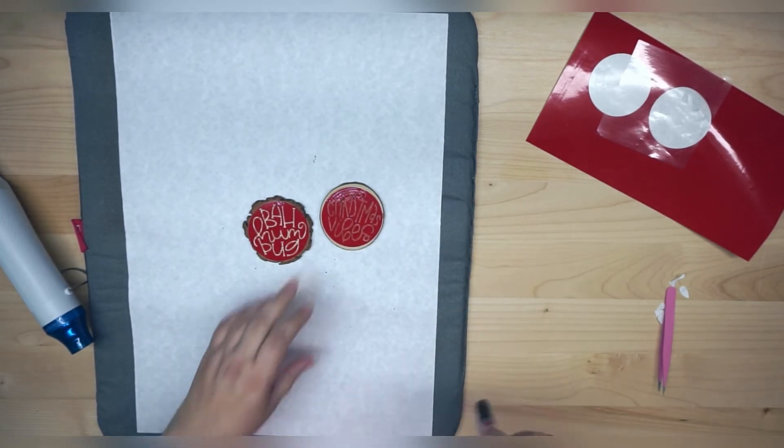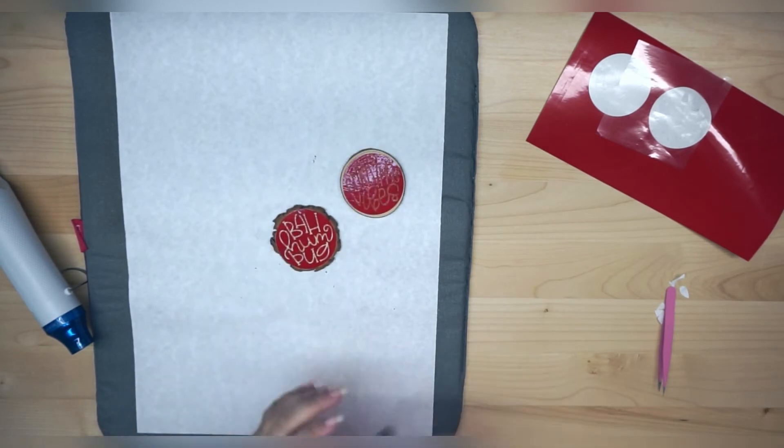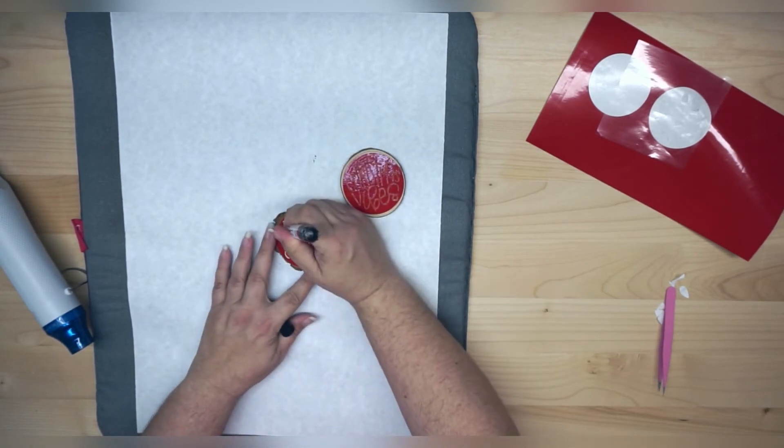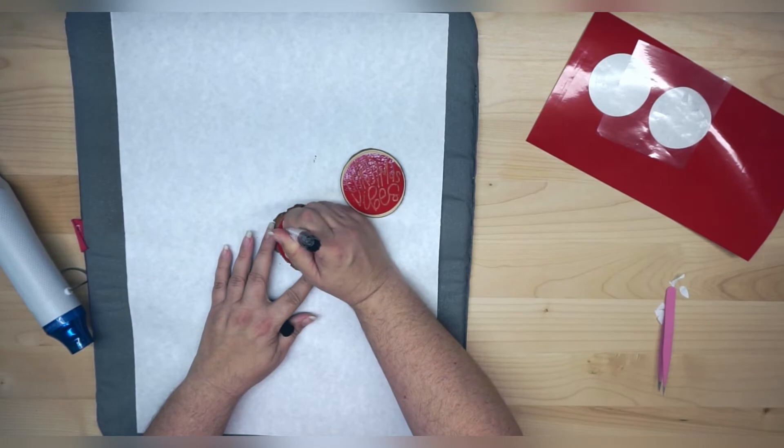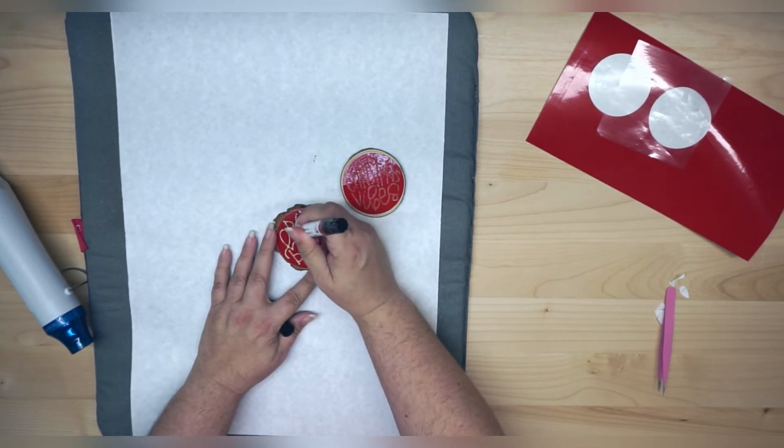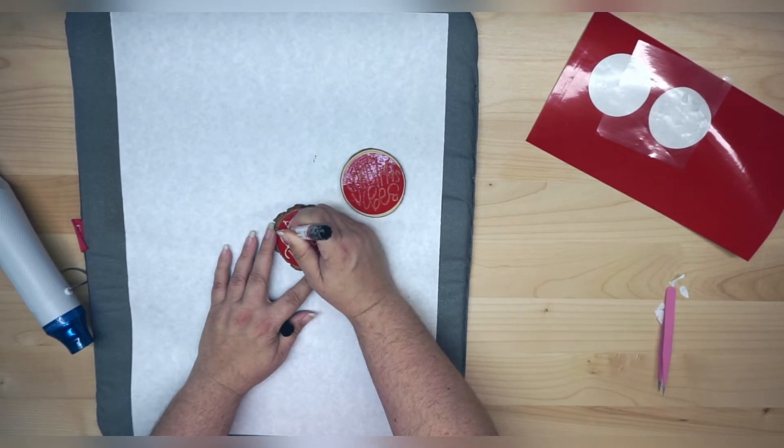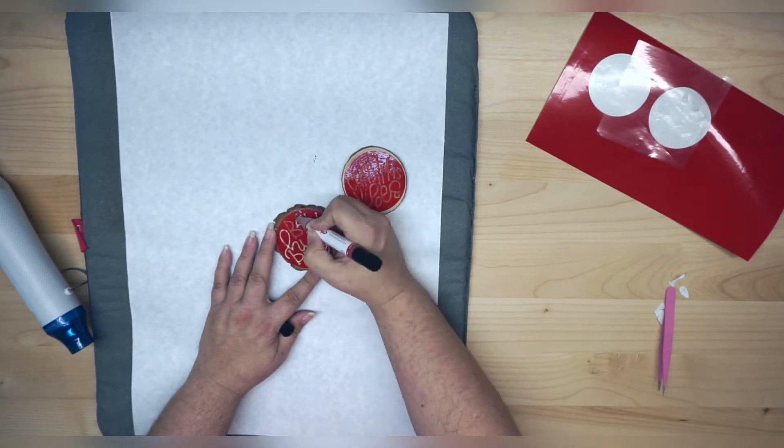We're just going to let that sit and dry for a minute. I'm going to use my tip. Now it is kind of like a paint pen, where you have to prime it first. Alright, so we're just going to hold it down, and that should let the fluid flow into the marker tip.